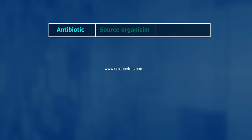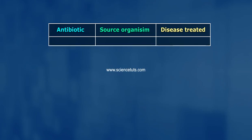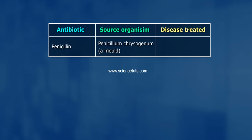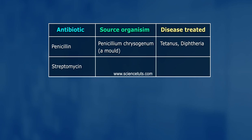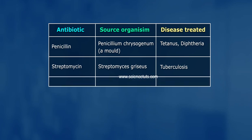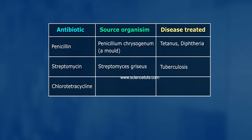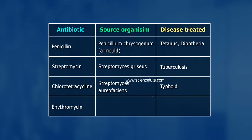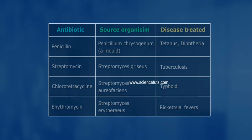Antibiotic — Source Organism — Disease Treated: Penicillin, sourced from Penicillium chrysogenum (a mould), treats tetanus and diphtheria. Streptomycin, sourced from Streptomyces griseus, treats tuberculosis. Chlorotetracycline, sourced from Streptomyces aureofaciens, treats typhoid. Erythromycin, sourced from Streptomyces erythraeus, treats rickettsial fevers.